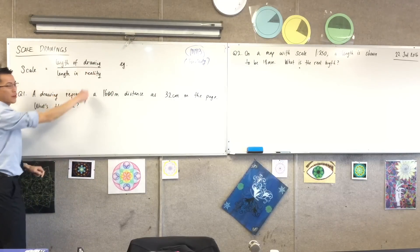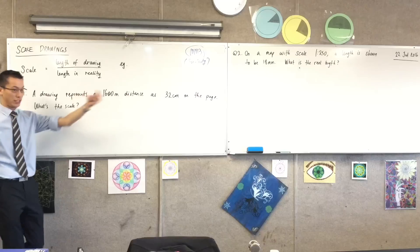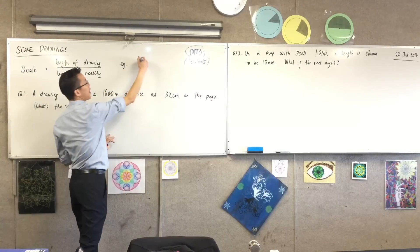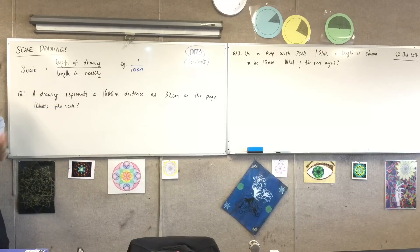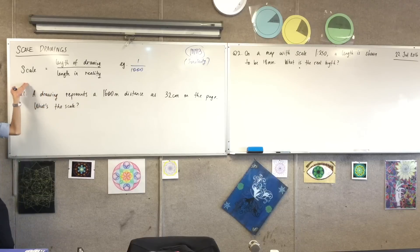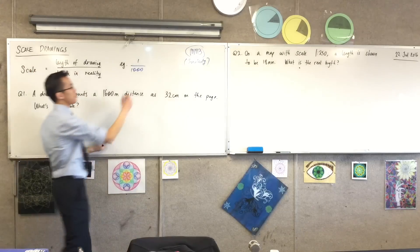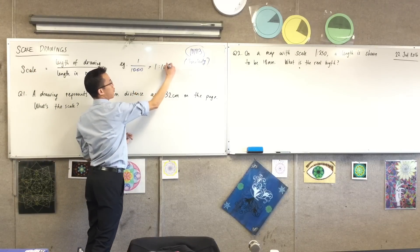if you've got a length on a drawing, you divide it by how long it actually is in reality, you might find that the drawing is one thousandth the size of the actual thing that it's representing. So you might see that scale written as a fraction, you might see it written as a ratio.